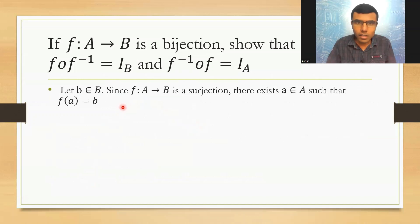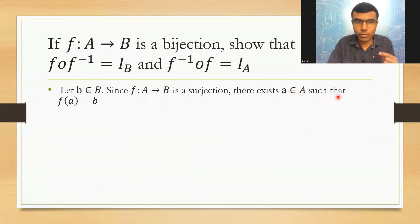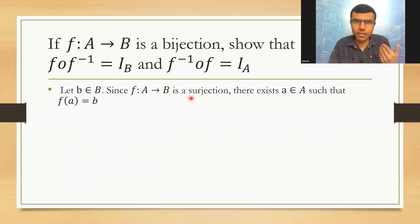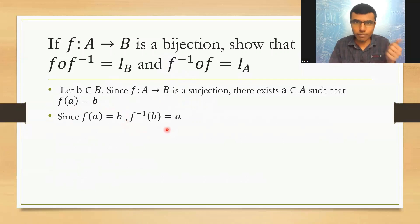Since F maps A to B is a bijection, it is also a surjection. Therefore, if I take an element b ∈ B, there must exist an element a ∈ A such that F(a) = b, because F is a surjection. And since F(a) = b, we have F⁻¹(b) = a.